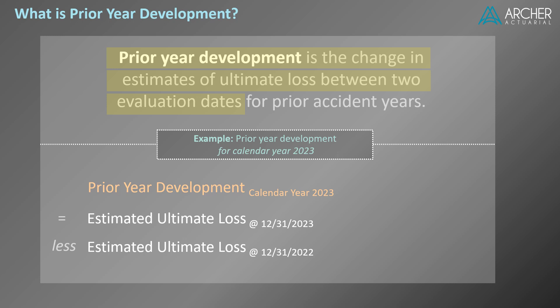Returning to the definition, we see that our estimates of ultimate loss are limited to prior accident years. In this example, this means that each of the ultimate loss estimates include only accident years 2022 and prior. This limitation ensures that each estimate of ultimate loss is on an apples-to-apples basis with respect to the scope of insured exposure. In other words, prior year development is a measure of change in estimates of ultimate loss for identical accident periods.